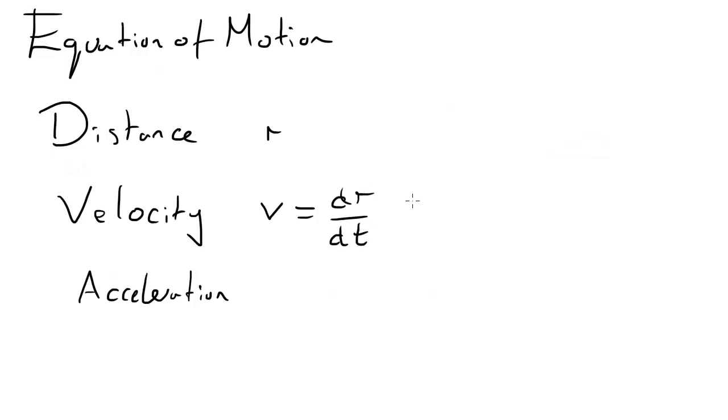Now this is a bit of calculus coming here, just a tad, don't be put off again. All I've wrote here is dr by dt. Now dr means the change in distance and dt is the change in time. So this is the rate of change of distance.